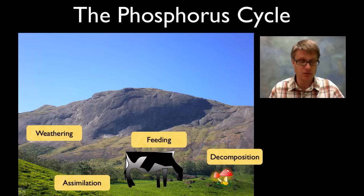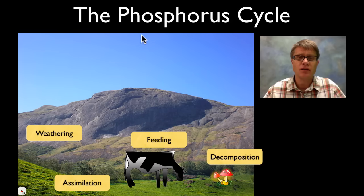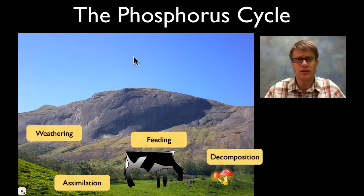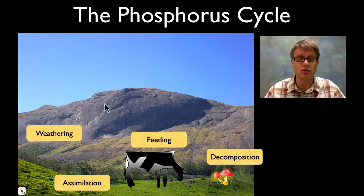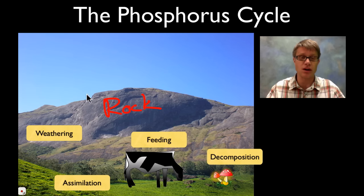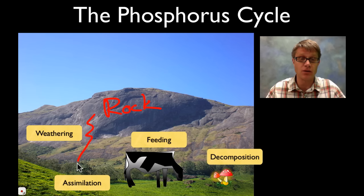Let's go to the last one — the phosphorus cycle. Phosphorus is not going to be stored in the atmosphere this time like it is for nitrogen and carbon. It's going to be stored in the rock. How does that get into plants? Well there's going to be rain and that weathering is going to break that rock down into something called soil.